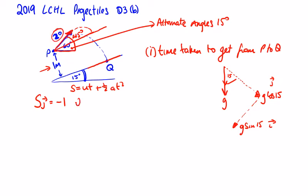...so it's 20 sine 45 times T plus a half by this acceleration here, G cos 15 by T squared, and that's equal to minus one, the distance traveled in the J direction.